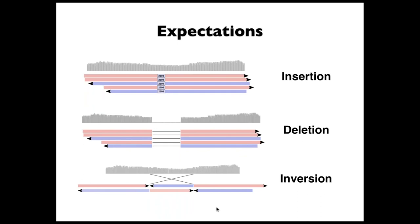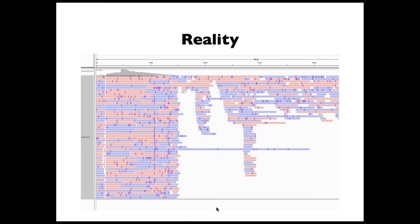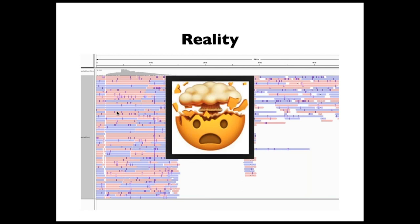That's basically the framework for detecting structural variation — so much for expectations. Reality often looks very different. This is an example from the wild: here on the left is part of a tandemly inverted repeat, and it's just a huge mess that leads to really crazy output in your genotypes and structural variant calls. To summarize that slide: that's how I often felt when looking at these alignments.